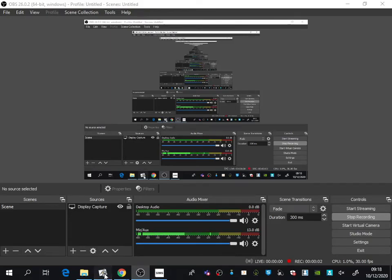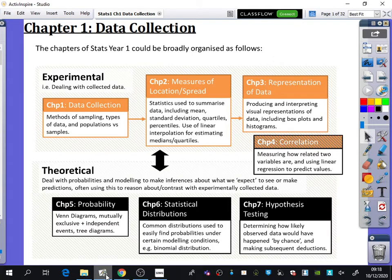We're starting statistics, the first part of applied maths we'll be doing. This is a big overview of what statistics looks like at A-level. The chapters of stats year one could be broadly organized as follows.